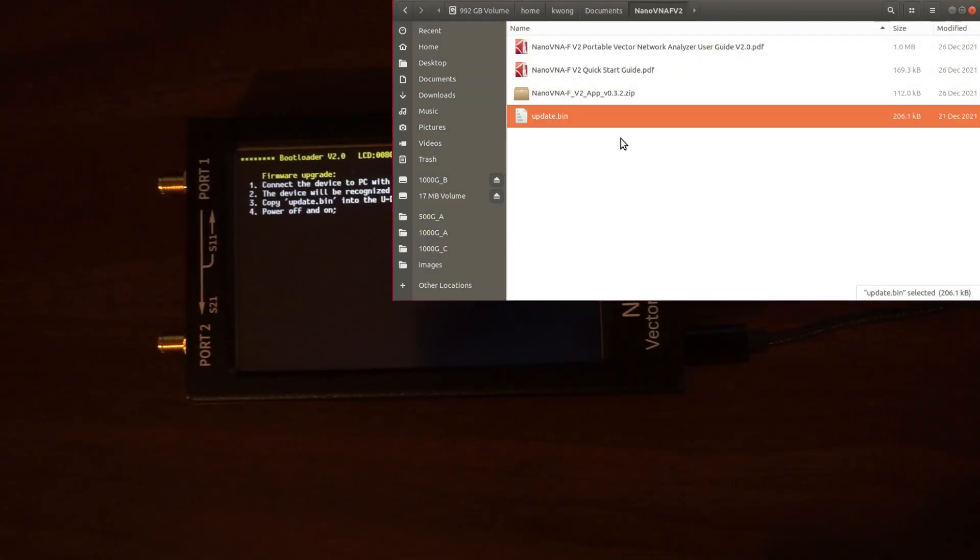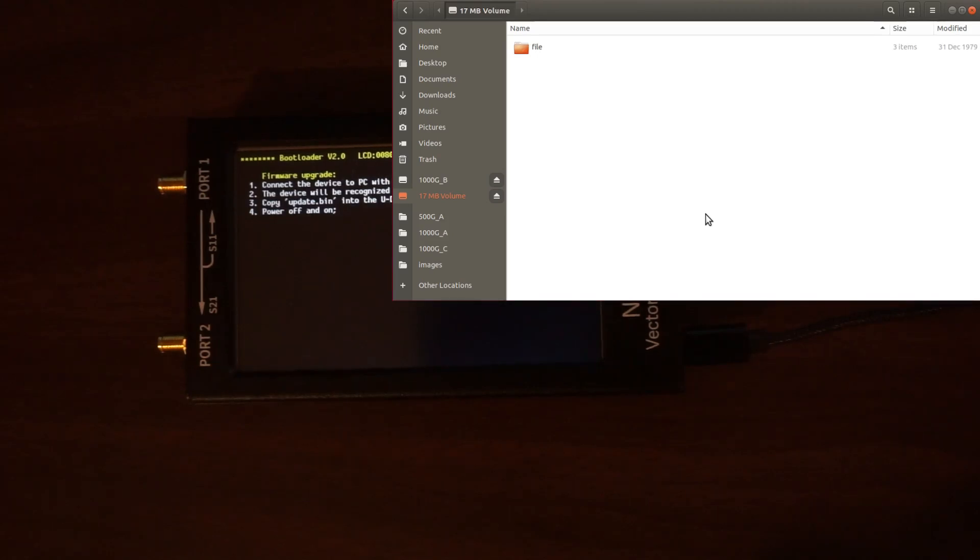I had already unzipped it, and you can see the update.bin file. All I need to do now is copy this file and paste it onto the flash drive.